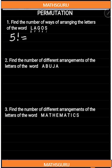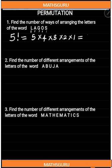From our previous understanding of factorial, we know that five factorial simply means five times four times three times two times one. And that will give us 120 ways. That is to say, we can arrange the letters of the word Lagos in 120 ways.